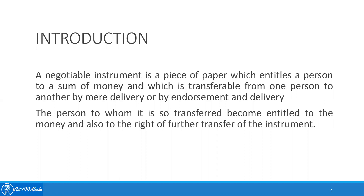I can explain this using a very simple example. Suppose I am giving a cash check of 10,000 rupees to a person called A. In that case, that check of 10,000 rupees is a negotiable instrument and by way of transferring it to the person called A, it is called a mere delivery. I also have an option to do an endorsement and delivery, where I will sign on the backside of the check and then transfer it to that particular person called A. So it is an endorsement and delivery.